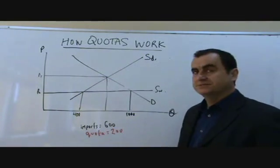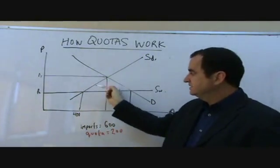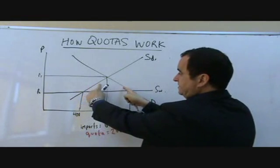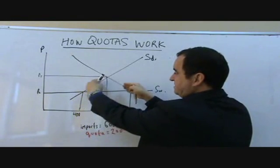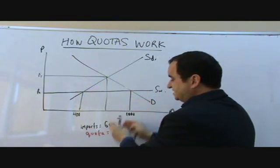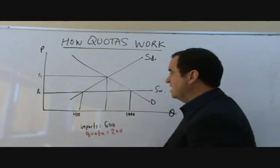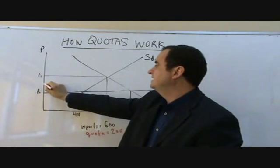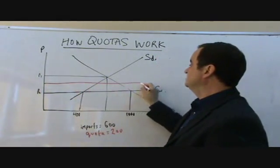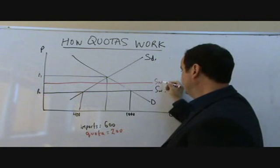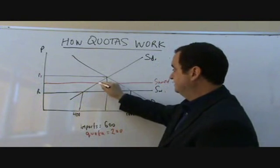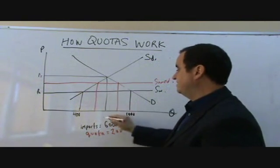And so what's going to happen is this. Price is going to rise. Now, price will rise until the excess demand, the distance by which demand is greater than supply, will equal the quota and can be satisfied by the quota. At that point, there's no need for price to rise anymore. I suppose it will be somewhere around here.